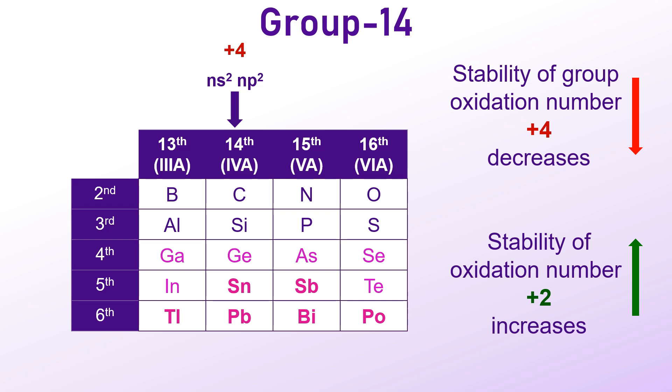Heavier elements like germanium, tin and lead also exhibit +2 oxidation state, along with the +4 oxidation state. For instance, lead is more stable in the +2 oxidation state than in the +4 oxidation state.